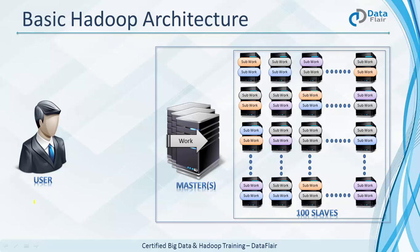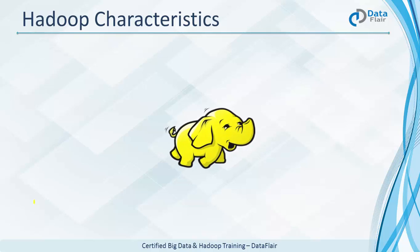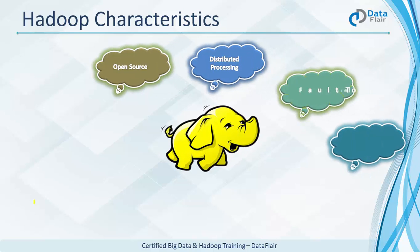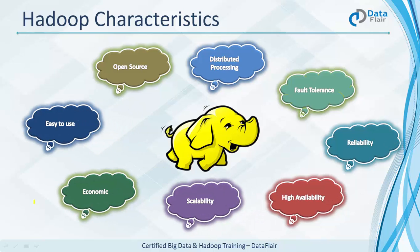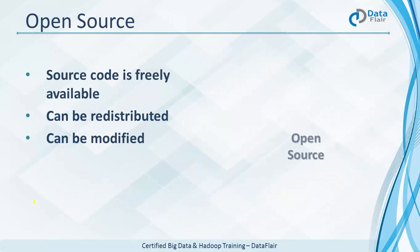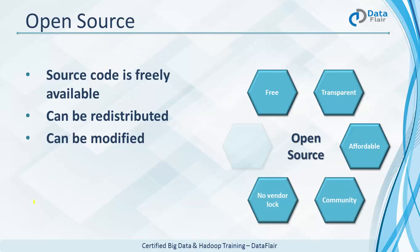Now let's talk about Hadoop's characteristics that make it a very popular framework in the industry: open source, distributed processing, fault tolerance, reliability, high availability, scalability, economic, and easy to use. Open source means the source code is freely available — you can download, use, redistribute, modify, and sell it under your own name. The license is Apache 2.0, which has no restrictions.